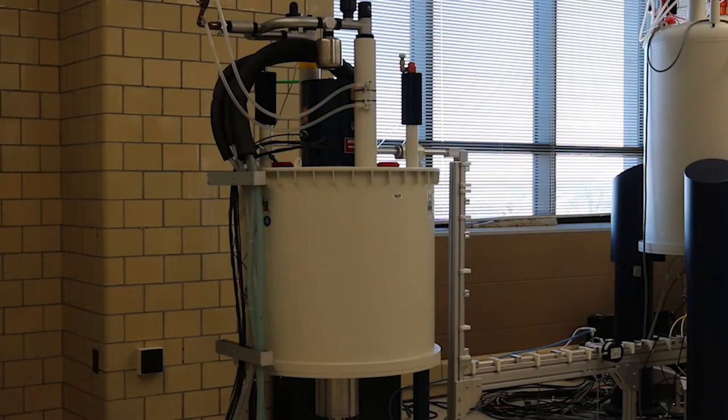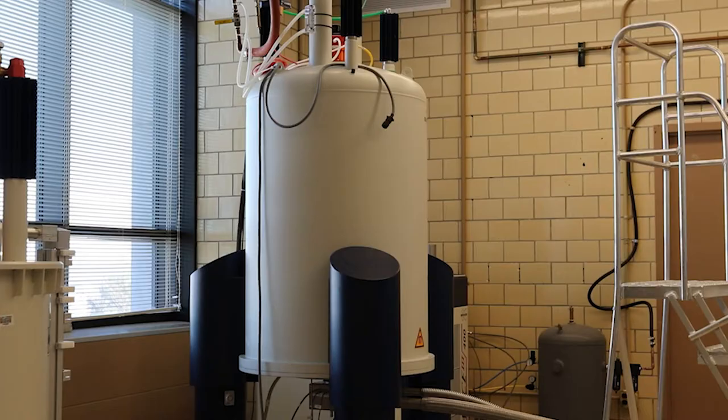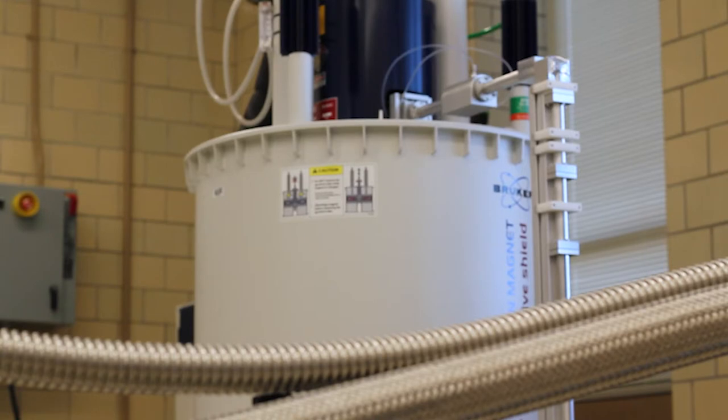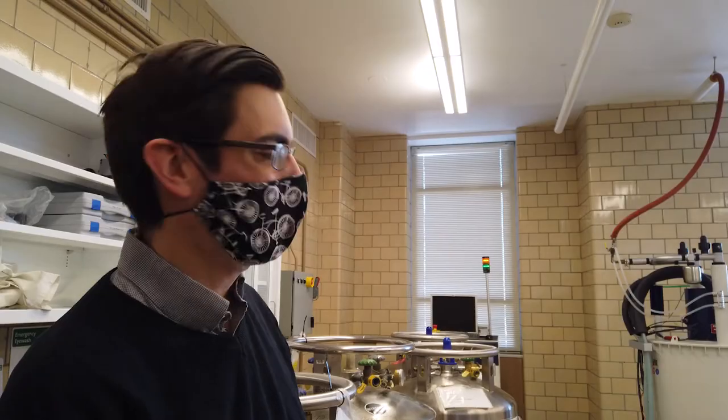This is composed of two superconducting magnets. We have here a normal 400 megahertz NMR magnet, and on the left here is a 9.7 tesla magnet that's used for the gyrotron, which is the microwave source for DNP.